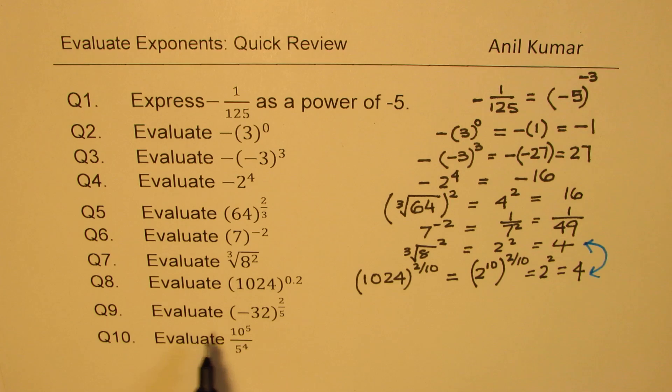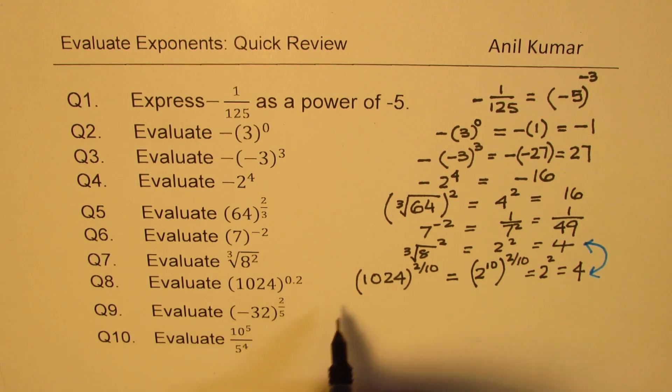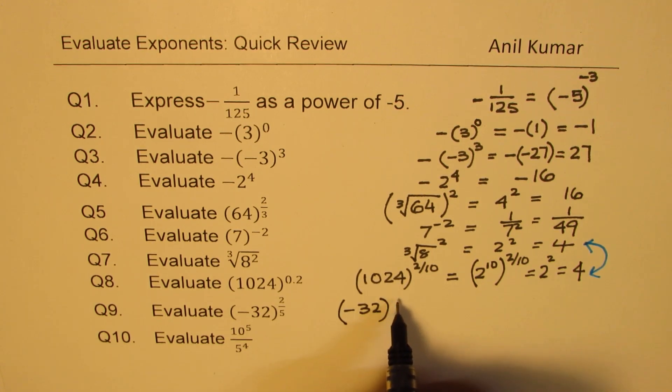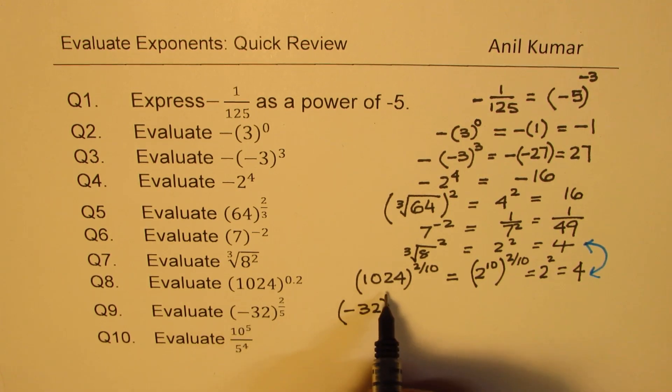Question number 9 here is to evaluate minus 32 to the power of 2 over 5. If I do fifth root, let's rewrite this. So it is minus 32 to the power of, since it is squared, finally we are going to get positive answer. Remember that.